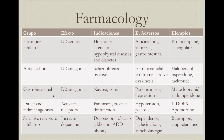D2 antagonists can also be used for gastrointestinal problems. These drugs usually don't cross the blood-brain barrier, but can help patients with nausea and vomiting by promoting gastric motility. Nausea is also mediated by the area postrema, a brain region that lacks a traditional blood-brain barrier, so these drugs can reach it. Side effects include Parkinsonism and depression. Main examples are metoclopramide and domperidone.